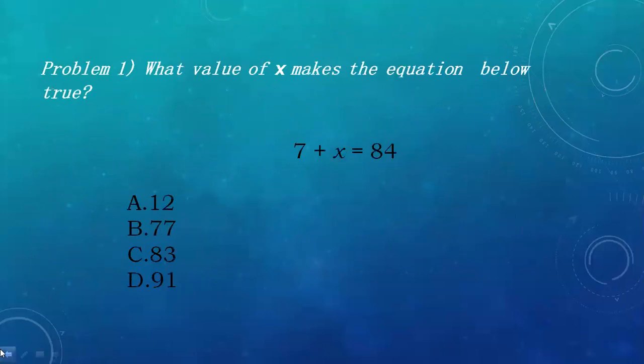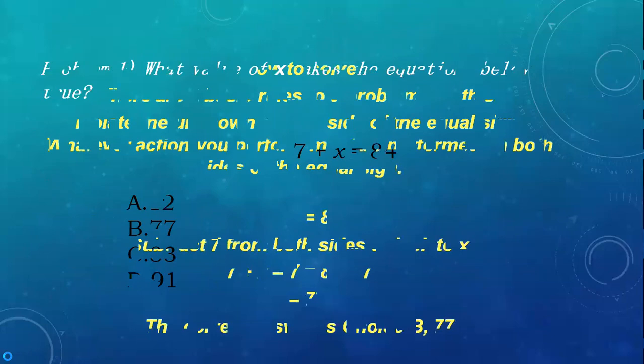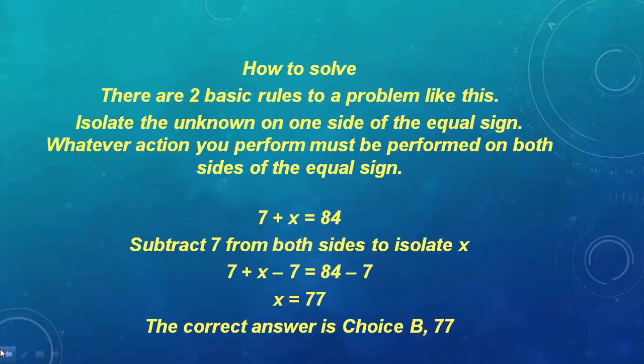If we discuss the problem: what value of x makes the equation below true? The equation is 7 plus x equals 84 and we have four options: 12, 77, 83, and 91. What is the rule to solve this? The rule is: first, isolate the unknown variable on one side of the equal sign.